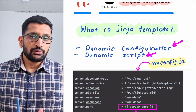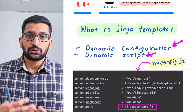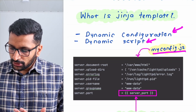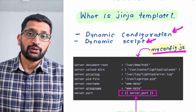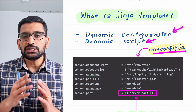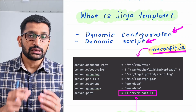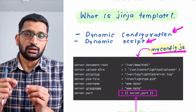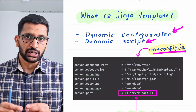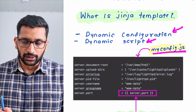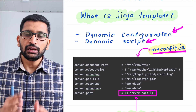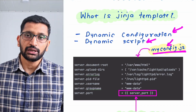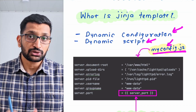Let's start with how you can create a Jinja2 template. On the screen you can see I have created my Jinja2 template with the name myconfig.j2. Any Jinja2 template you create inside your Ansible project should end with the extension .j2. You can define any name for your Jinja2 template — here I have kept the name as myconfig, but you can keep any name of your choice.